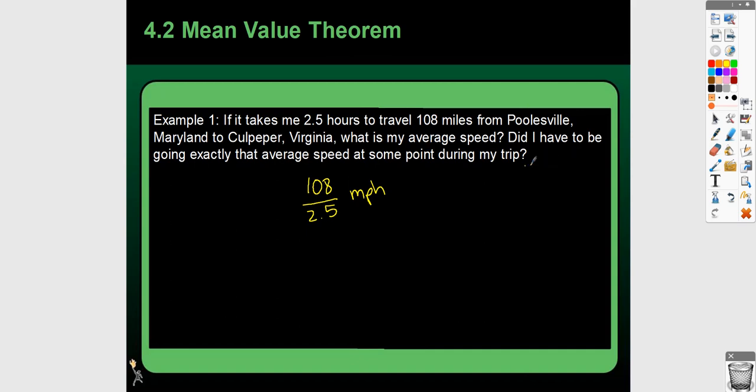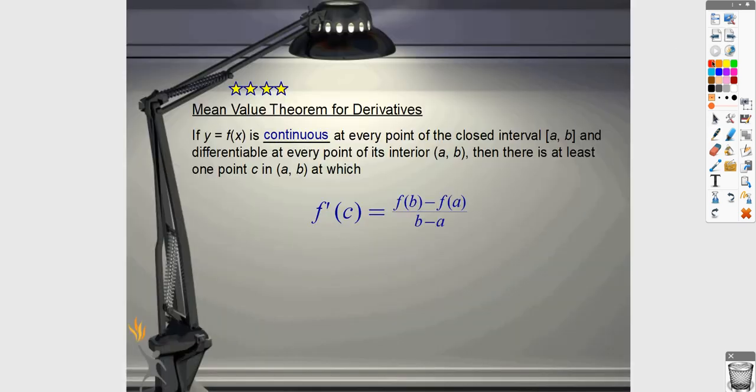So did I have to be going exactly that average speed at some point during the trip? Yes. Because in order to get that as your average speed, because your speed is going to be continuous, you are going to have to go through that exact mileage at some point during your trip. So essentially, that is what the Mean Value Theorem is.